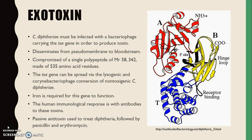This pathogen must be infected with a bacteriophage carrying the tox gene in order to produce toxins. Unless C. diphtheriae is infected with this bacteriophage, it cannot cause the disease we know as diphtheria. The human immunological response is with antibodies to these toxins. The tox gene can be spread via the lysogenic corynebacteriophage conversion of non-toxigenic C. diphtheriae.